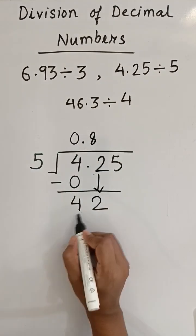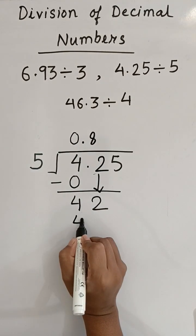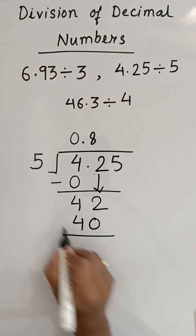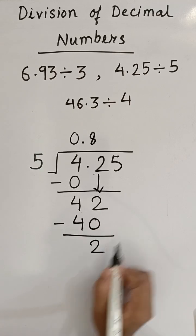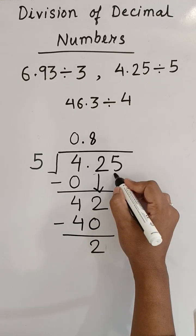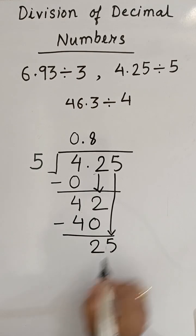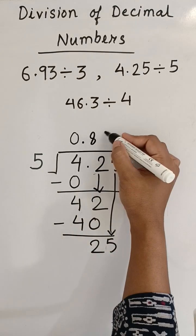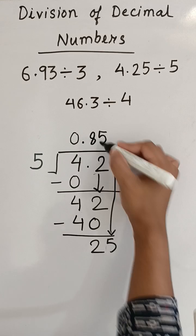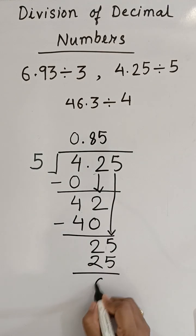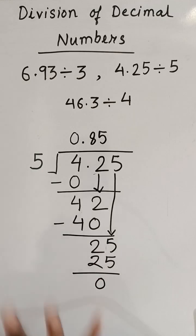Now, 5 how many times into 42? 5 into 8 is 40, nearest to 42 is 40. Now minus, 2 will come down. The 100th number which is 5 comes down. Now 5 into 5 is 25, remainder is 0. So this is also done.